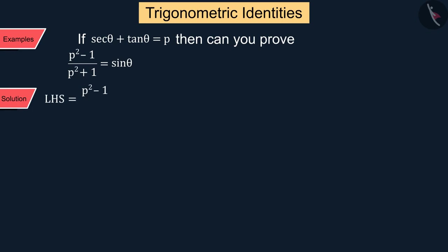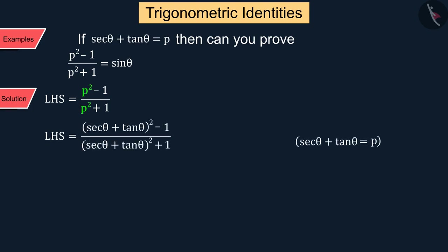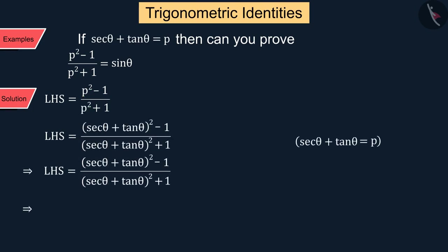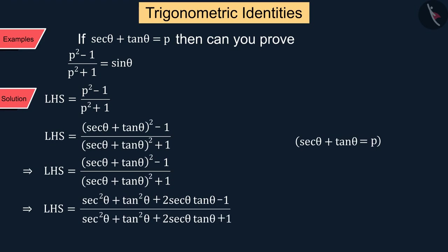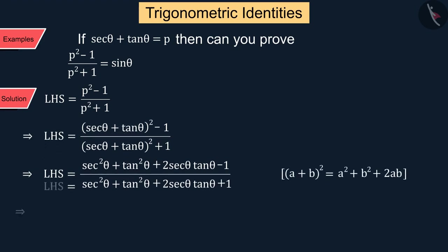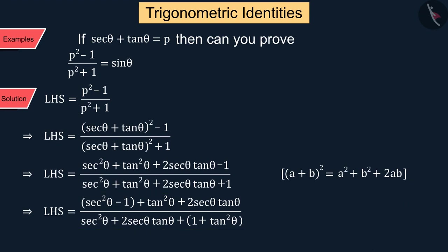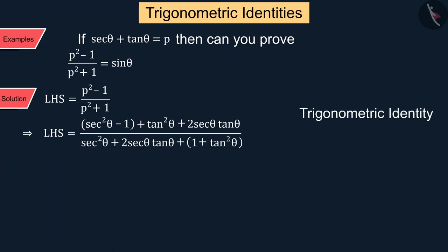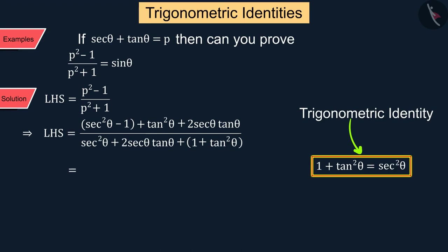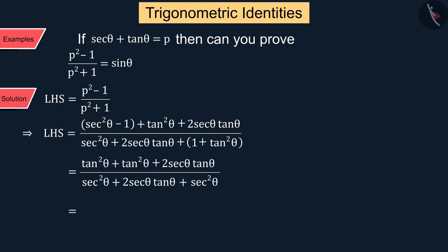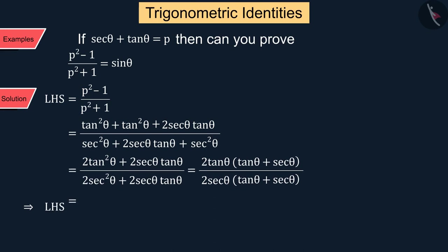We consider the left side of the given equation, where according to the given information p is replaced by sec θ plus tan θ, from which we get the following equation. Using the trigonometric identity 1 + tan²θ = sec²θ, after solving we obtain tan θ upon sec θ.